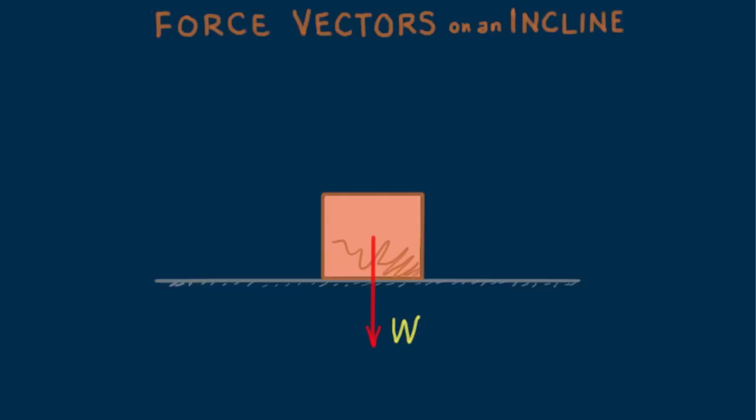The support force provided by the surface it rests on. The surface presses upward on the block, the normal force, which we label N. Both N and W have the same magnitude, cancel to zero, so the block is in static equilibrium.